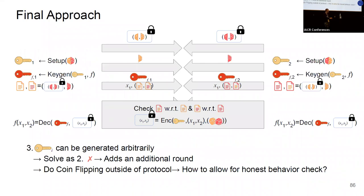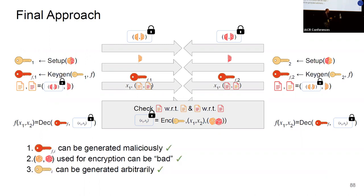With this new notion of k-delayed input function MPC, we are able to argue the security of the construction, solving all three issues discussed. What remains is to verify that the communication complexity depends only on the depth of the function. We can confirm this because all messages are independent of the function being computed — we are just exchanging commitments and the values they were generated from. These are checked and the ciphertext is generated, depending only on the input length. The only function-dependent component is the functional key shares, but by the succinctness of the combiner, these depend only on the depth.